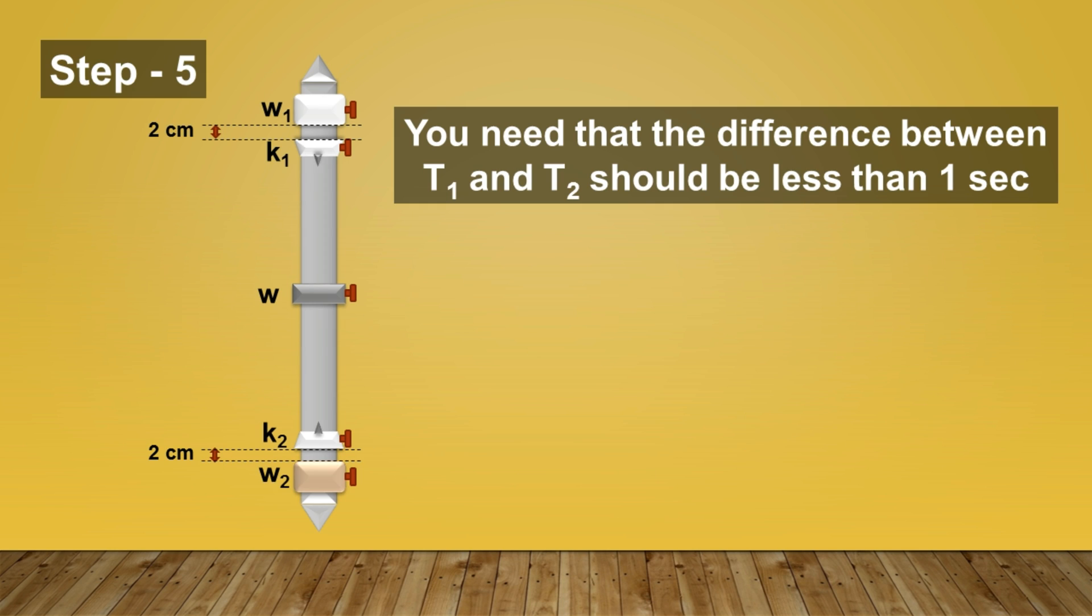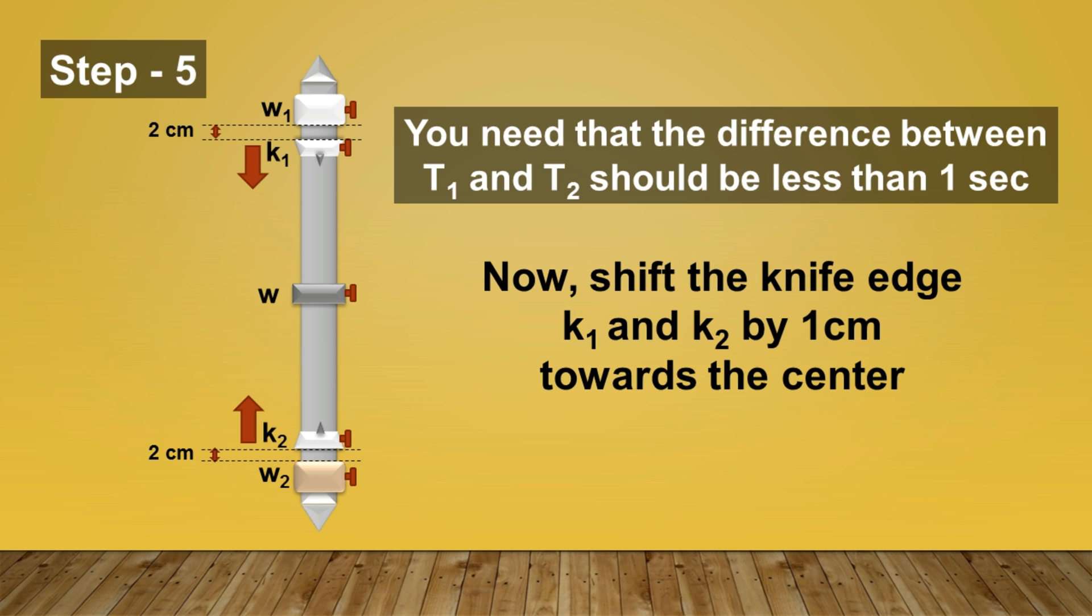The main requirement in this experiment is that the difference between time T1 and T2 should be less than 1 second so that we get some accurate values of acceleration due to gravity. But this arrangement can give you a higher value such that the difference between T1 and T2 is large. In that case, you can shift knife K1 and K2 towards the center about 1 cm.